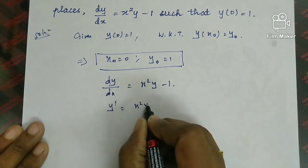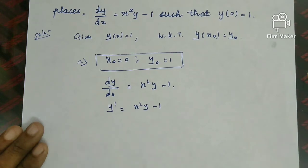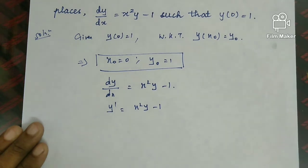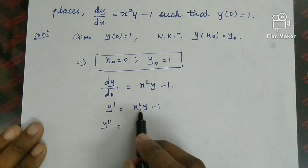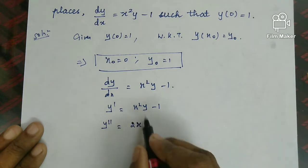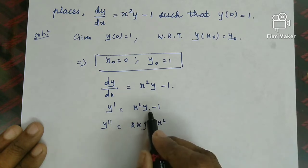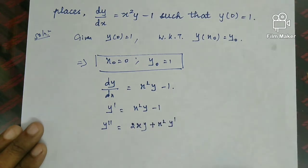Differentiating y dash, the left hand side gives y double dash. On the right hand side, x squared y is differentiated using the product rule: (x²)'·y + x²·y' = 2xy + x²y'. The constant −1 differentiates to 0. So y double dash equals 2xy plus x squared y dash.